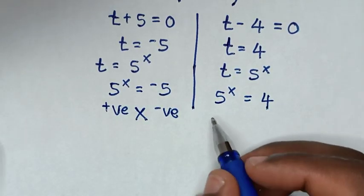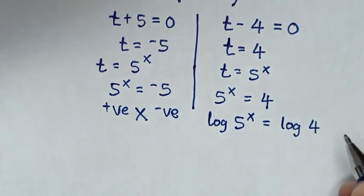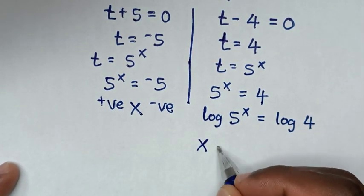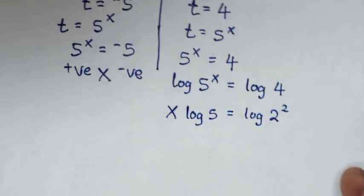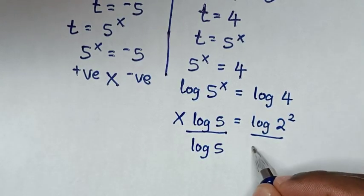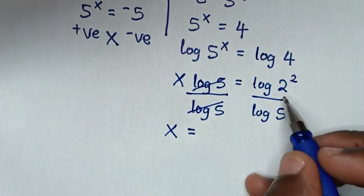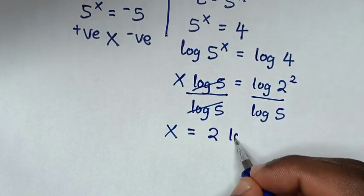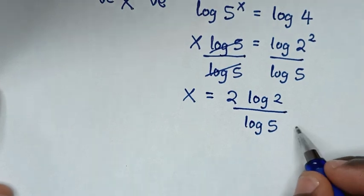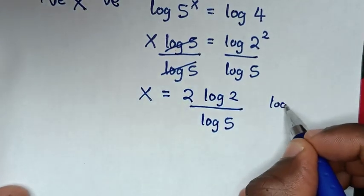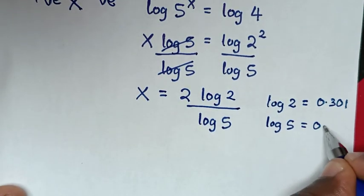We continue to solve from the valid solution. So we apply log to both sides: log of 5 power of x is equal to log of 4. Then this power of x will move to the front, so it will be x log 5 is equal to log 4, which is the same as log 2 squared. In the next step, we divide both sides by log 5. This gives x is equal to 2 log 2 over log 5. We substitute the values: log 2 is equal to 0.301 and log 5 is equal to 0.699.